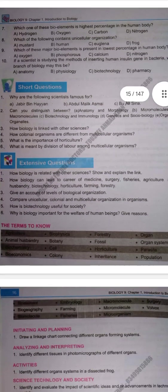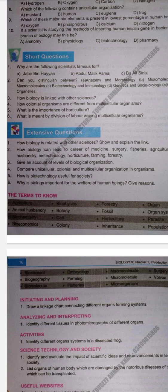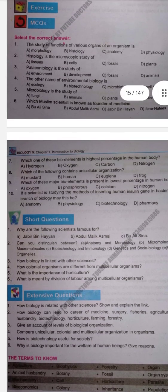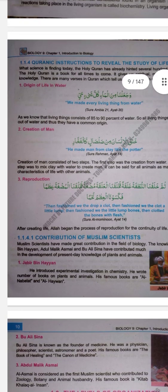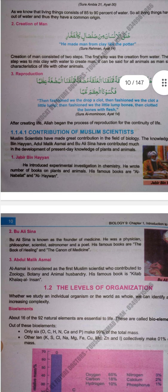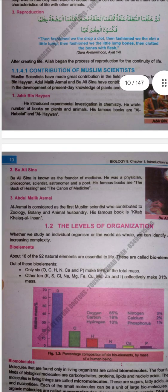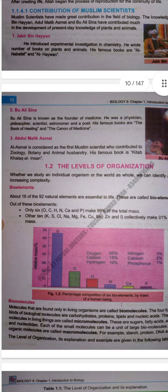Next are Short Questions. First question: What are the following scientists famous for — A. Jabir bin Hayyan, B. Abdul Malik Ismail, C. Bu Ali Sina? Students, refer to page numbers 9 and 10 — the contribution of Muslim scientists.